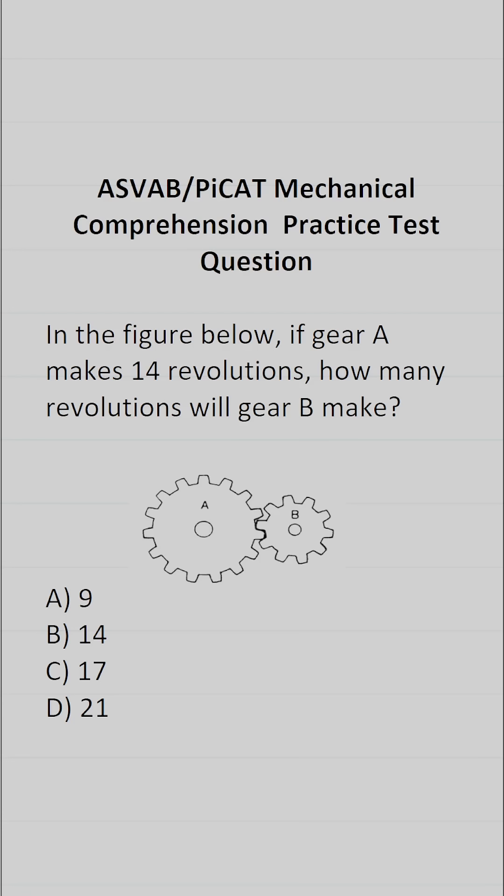So first of all, I want to point out that gear A is bigger than gear B. Therefore, gear A is going to make fewer revolutions than gear B. So if gear A makes 14 revolutions, we know gear B is going to make more revolutions than that. So we know that A and B are not correct.